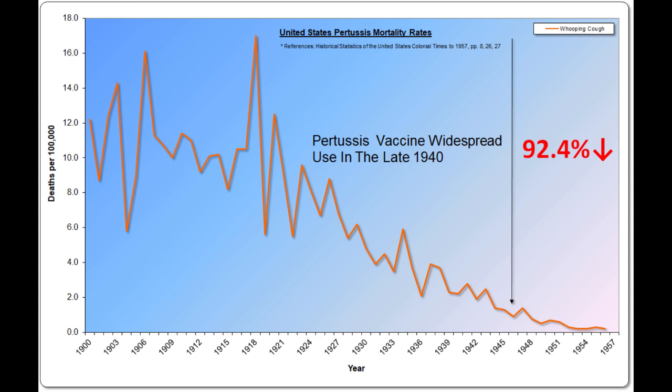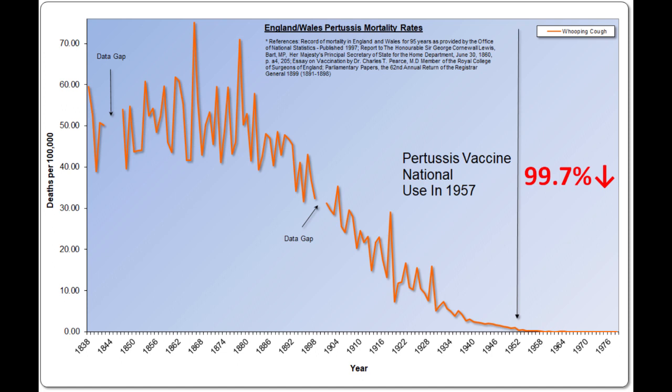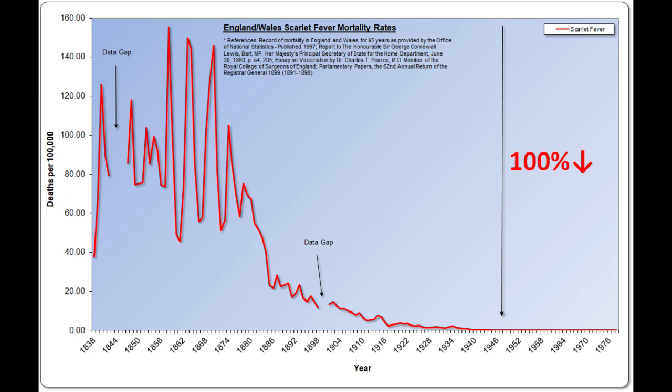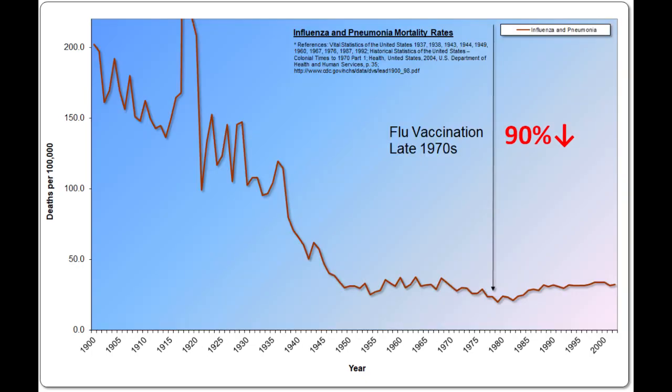The same phenomenon happened with whooping cough, also known as pertussis. In the United States, there was a fall in whooping cough deaths from the peak of over 92% before vaccination programs began. In England, there was again a more dramatic decline in deaths of over 99%, almost 100% from the peak before their national whooping cough vaccination program began. Scarlet fever, historically a bigger killer than measles or whooping cough, fell to zero without any vaccination program.